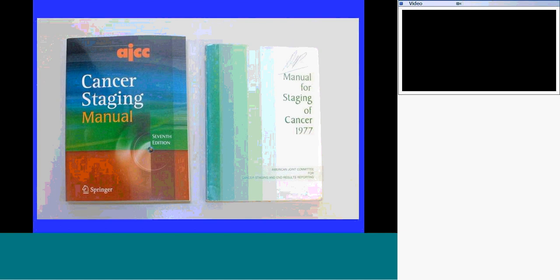As I show here, the original staging manual published in 1977 and the current 7th edition are lined up side by side — and this is not trick photography. The 7th edition is noticeably thicker. The difference in thickness is due to many additional tumor types included and much more information and validation. Many different tumor types are now included that were not originally, along with lots more information.